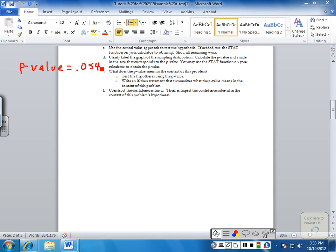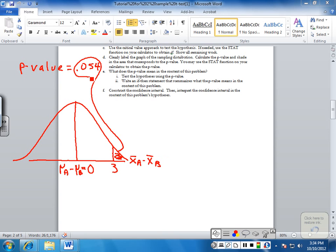You can also note that the t-test value that you would get on your calculator is very close to 1.67, which is what we just calculated. So, to draw the sampling distribution, mu A minus mu B is 0 at the center. The difference that we observed was 3, and this area here is the P-value of 0.054. So that's part D.